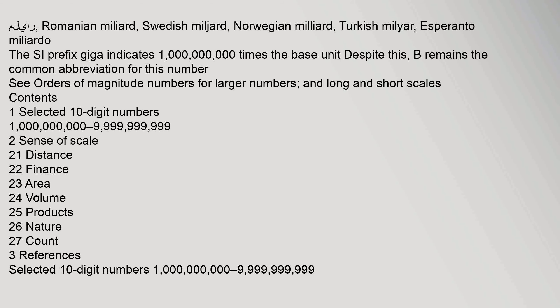The SI prefix 'giga' indicates 1 billion times the base unit. Despite this, 'b' remains the common abbreviation for this number. See orders of magnitude numbers for larger numbers and long and short scales.